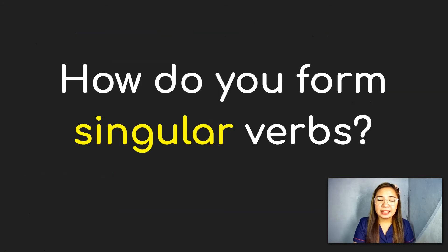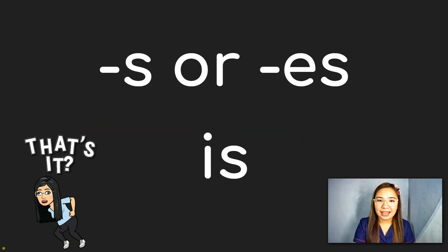And how do you form singular verbs? You form singular verbs by adding S or ES at the end, or by using the linking verb IS.